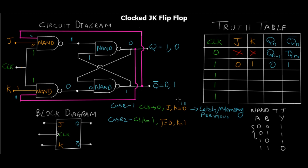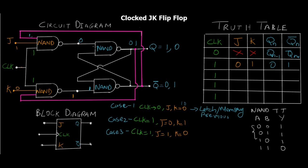Case three: clock equals one, J equals one, K equals zero. For the lower NAND gate the output is going to be one. For the upper NAND gate, the output depends on the third input from Q-bar. From the previous state Q-bar was one, so with three ones the output is zero. Supplying zero-one to the SR latch: one input is zero for the upper NAND gate so output is one. Q switches from zero to one and Q-bar becomes zero — this is the set state.